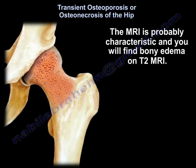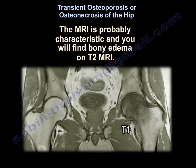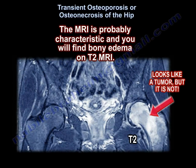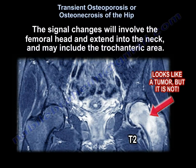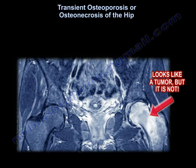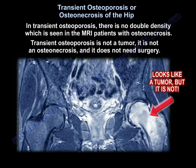The MRI is probably characteristic. You will find bony edema and increased signal intensity on T2 MRI. The signal changes will involve the femoral head and extend into the neck and maybe even the intertrochanteric area. In transient osteoporosis, there is no double density, which is seen in MRI of patients with osteonecrosis. Transient osteoporosis is not a tumor, it is not an osteonecrosis, and it does not need surgery.